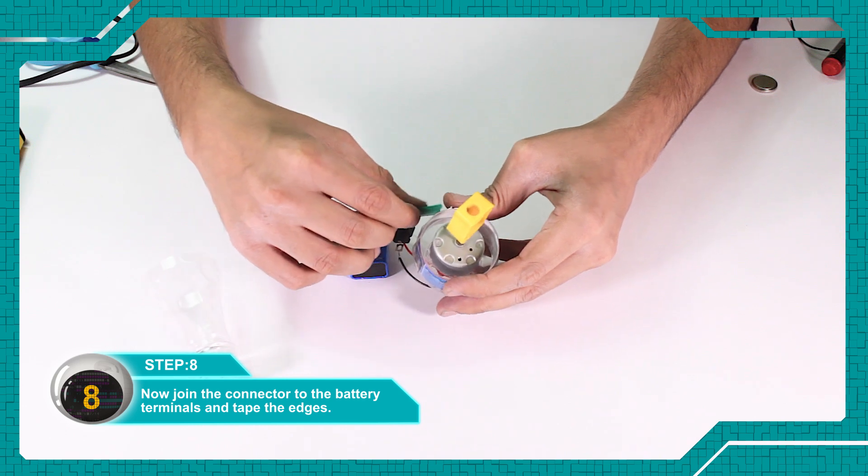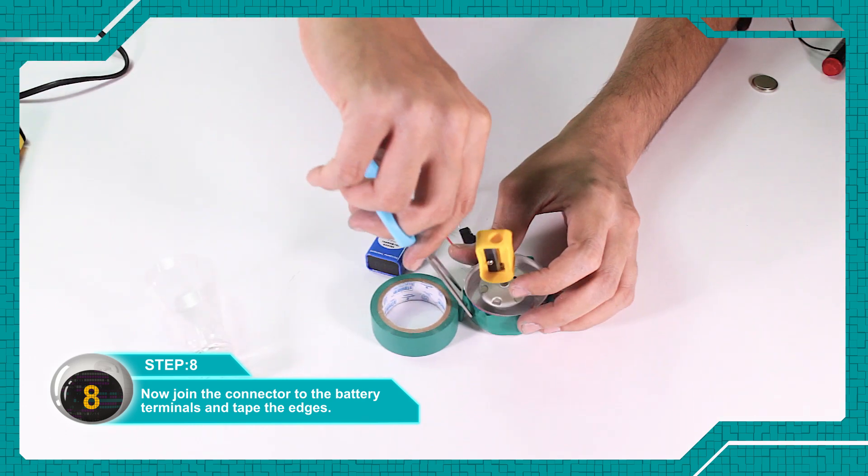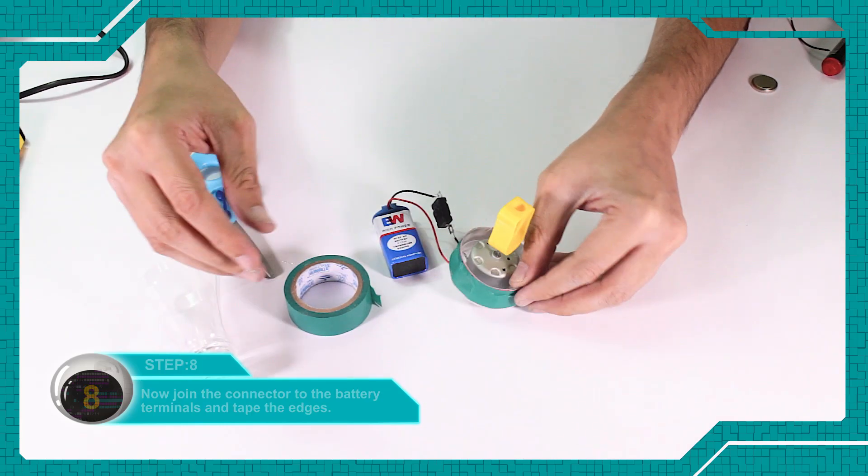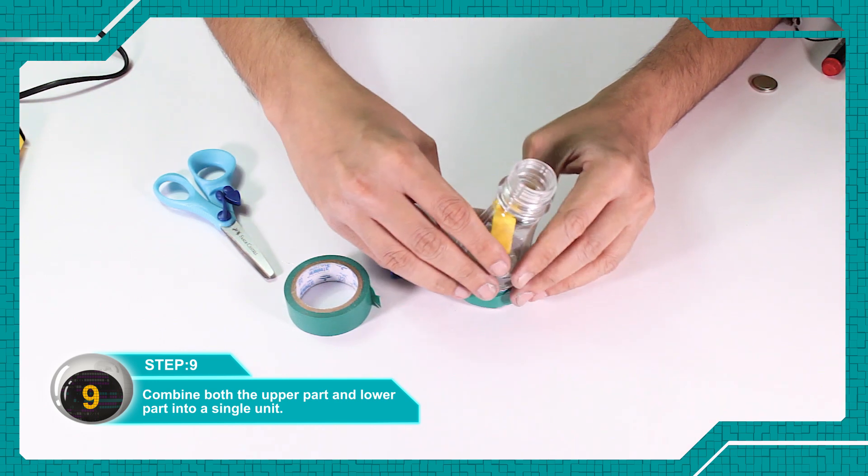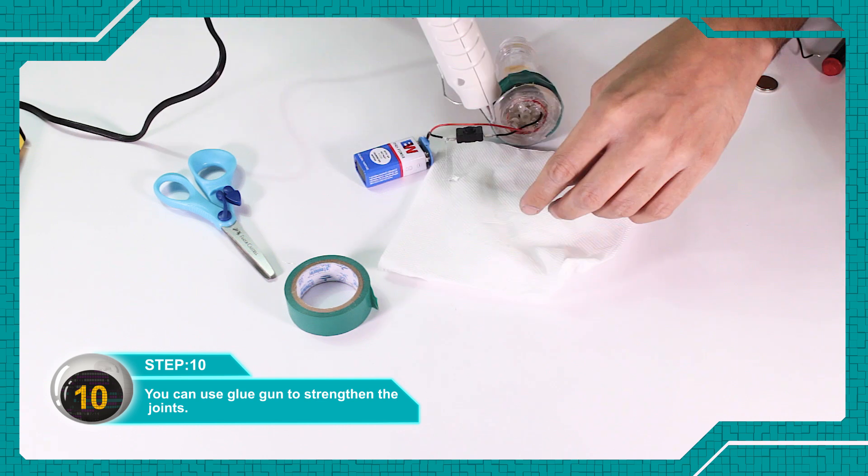Apply tape on the edges. Join the upper part and lower part into a single unit. Glue gun can also be used for the joints.